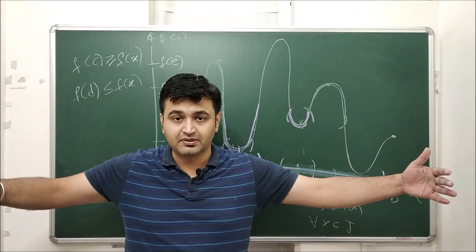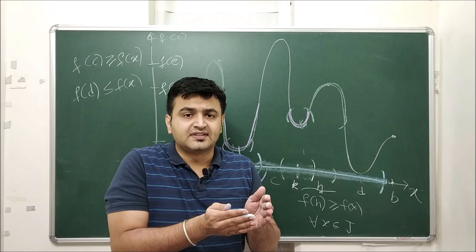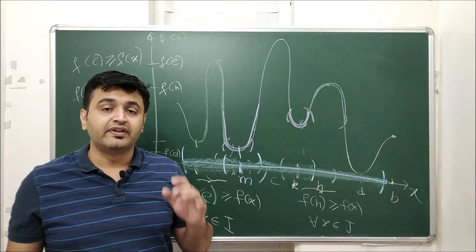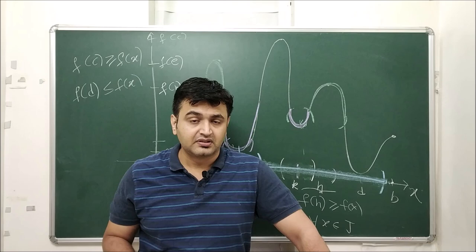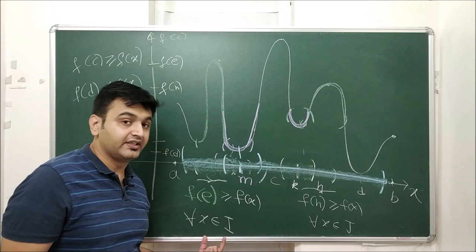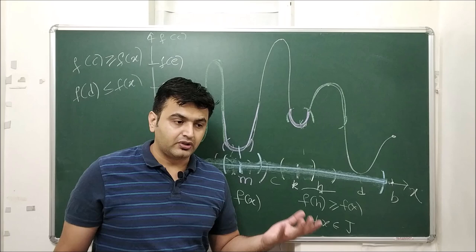Globally the function may not have a maximum or minimum at these points, but if you choose a small neighborhood, the function can have a maximum or minimum value there. Formally, a function has a local maximum at point C if there exists an open interval containing C such that f(C) ≥ f(x) for all x in that interval, and analogously for local minimum.